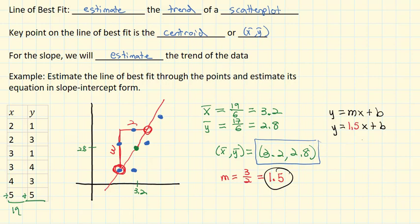So what we're going to do is we'll use 3.2 for x and 2.8 for y. That gives us 2.8 equals 1.5 times 3.2 plus b.